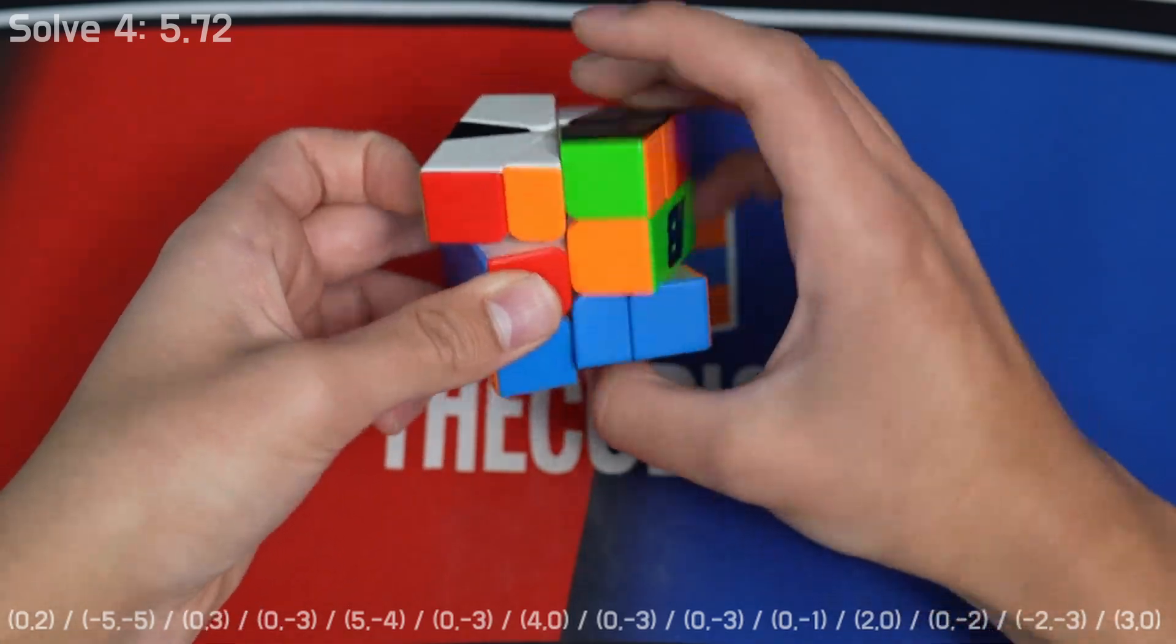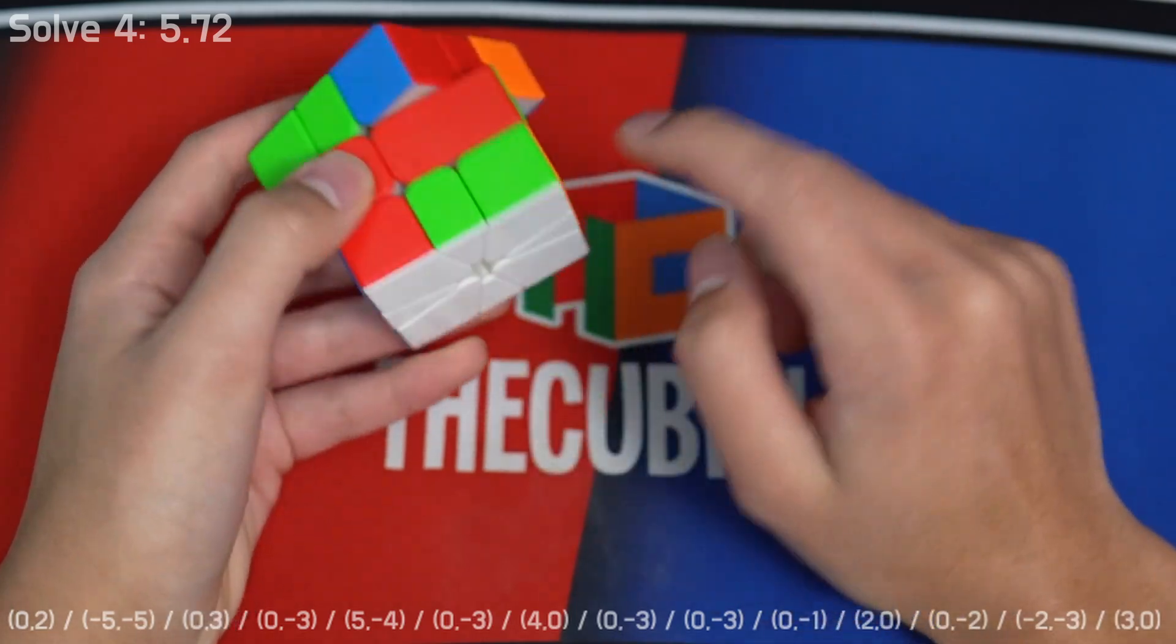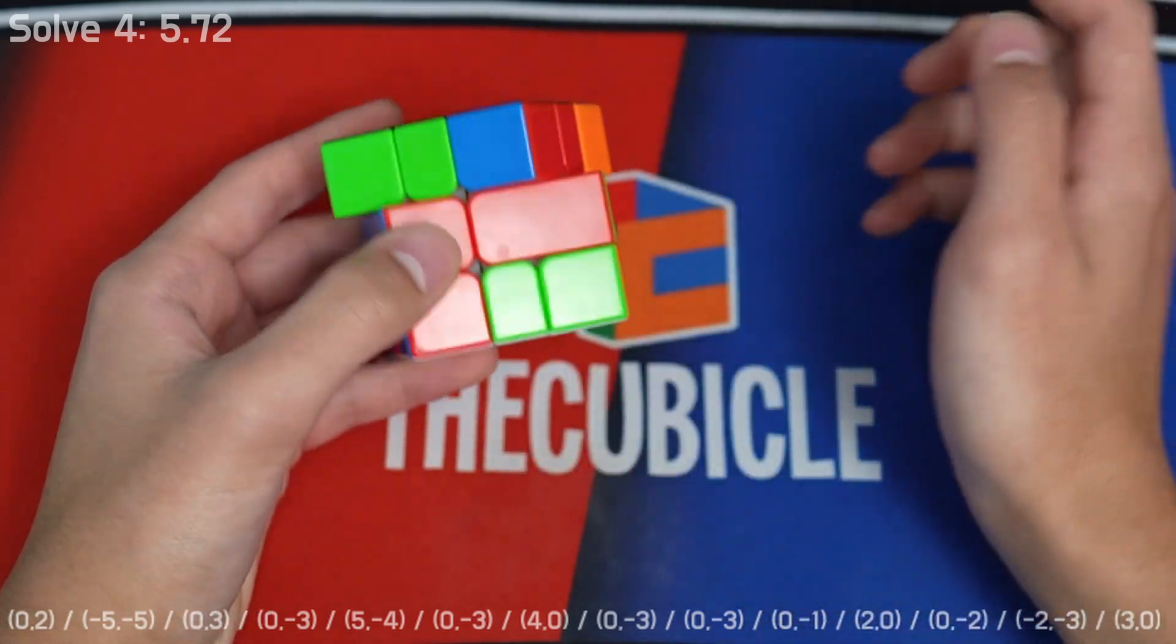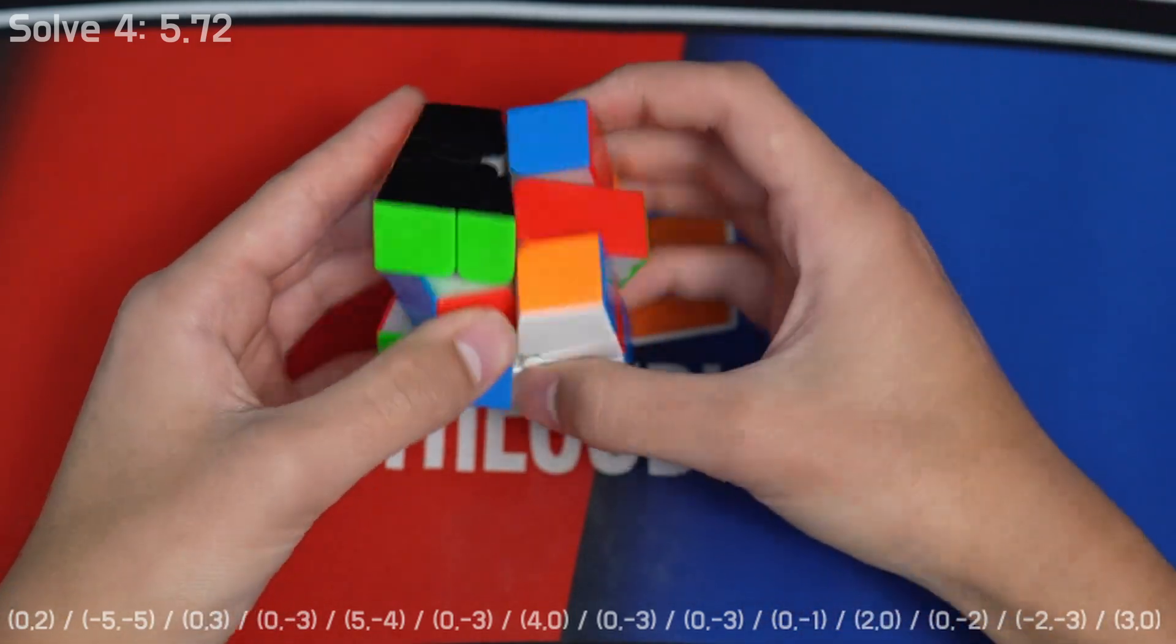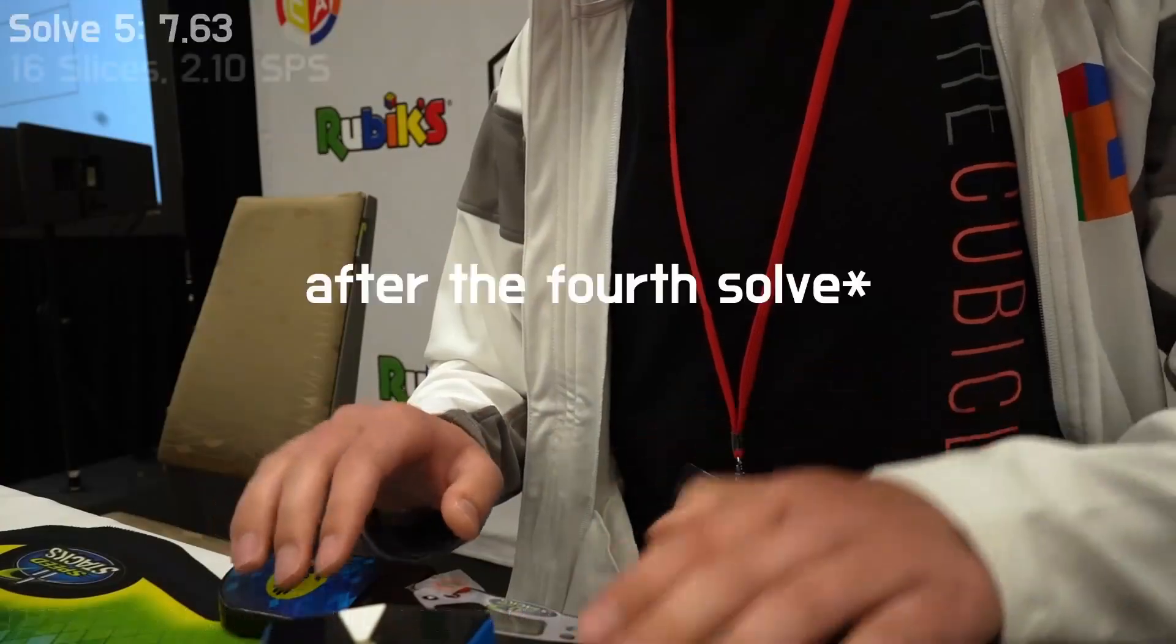And then I also got really lucky in PBL. This is NA, which is just two JJs. So I did JJ from here and then 04 front JJ like that, and then D2.